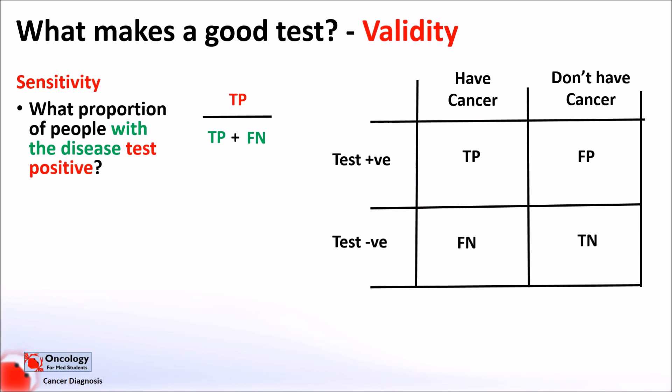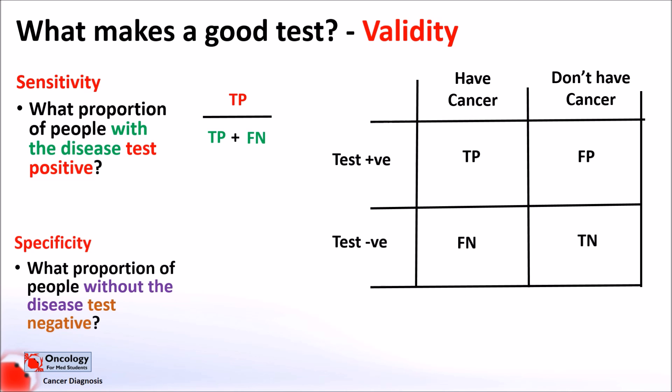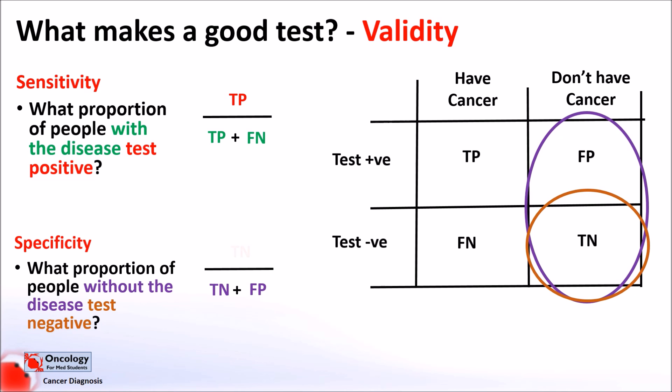Specificity, on the other hand, is a measure of how good a test is at identifying what proportion of people who don't have the disease are correctly given a negative result. Out of all the people who don't have the disease, what percentage correctly tested negative? The total number of people without cancer — the true negatives added with the false positives — divided into the number of true negatives will give us the specificity. A test with high specificity will minimise the number of people who don't have the disease going on to have unnecessary further testing, while a test with low specificity will allow lots of people to go on to have further unnecessary investigations.